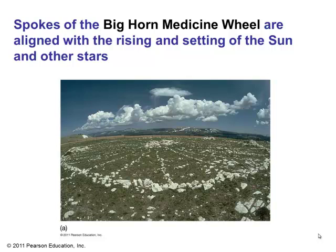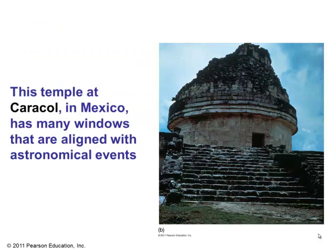This is a picture of the spokes of the Bighorn Medicine Wheel, and they are aligned with the rising and setting of the sun and other stars. Another observatory in the Americas is at the Caracol Temple in Mexico, built by the Mayan civilization. It has windows that seem to align with astronomical events, suggesting that part of Caracol's function may have been to keep track of the seasons and the heavens.